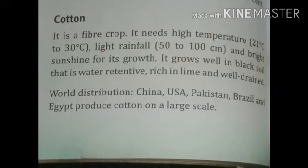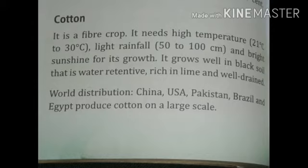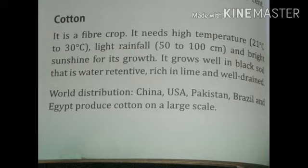Cotton is a fiber crop. It needs high temperature of 21 to 30 degrees Celsius and very light rainfall of 50 to 100 centimeters. Sunshine is good for its growth. It grows well in black, water-retentive soil. World distribution of cotton includes USA, Pakistan, Brazil and Egypt. In India, cotton is produced on a large scale in Gujarat, Maharashtra, Andhra Pradesh, Haryana and Punjab.